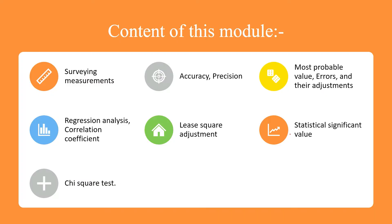The content of this module includes: surveying measurement, accuracy, precision, most probable value, errors and their adjustment, regression analysis, correlation coefficient, least square adjustment, chi-square test, scale, and significant value. We will describe all of these here.